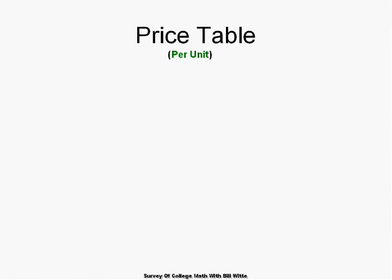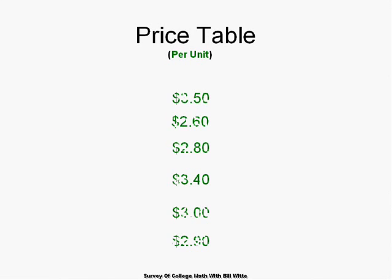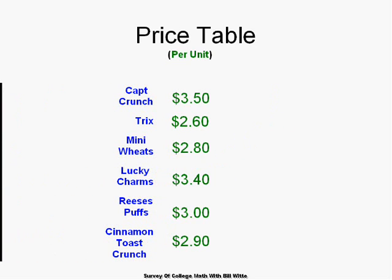We might also use a matrix for a price table. Of course we'd have to name the columns and rows. In this case the rows would be the various products and we'd only have one column, so this would be a six by one matrix.